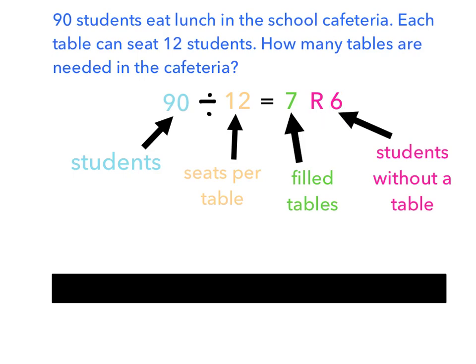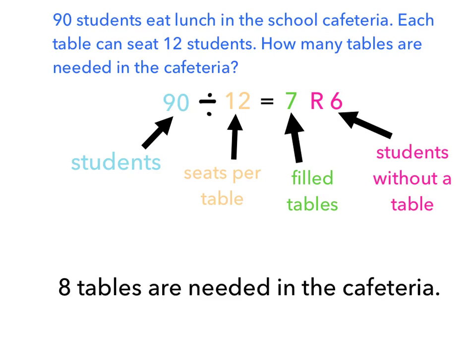And then there's remainder 6. The remainder 6 are the students who are without a table. They don't have a table. Now in this case, if we want to have every student seated at a table, we're going to need to round our number up so that every student has a seat. So in this case, 8 tables are needed in the cafeteria so that each student has a seat.